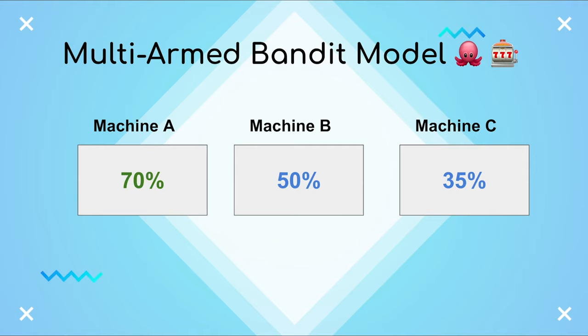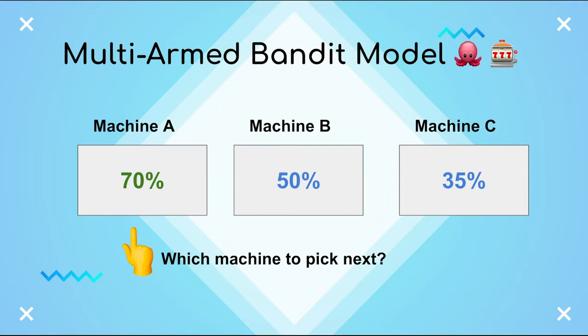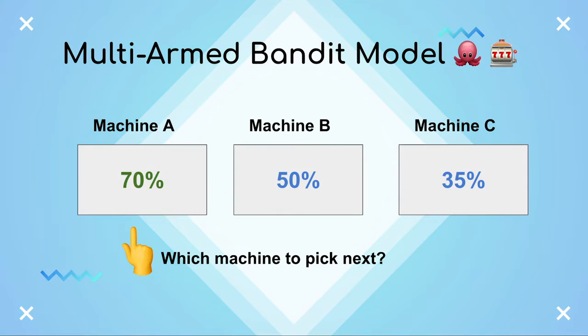So if you're testing A, B, and C, and A is progressing faster than B or C, Axe will put more resources behind A.